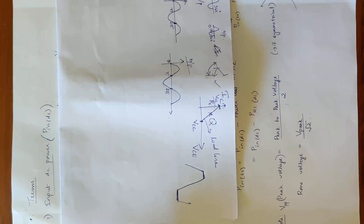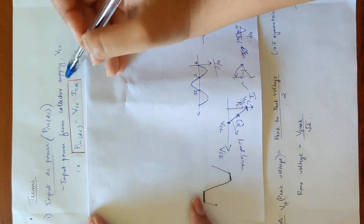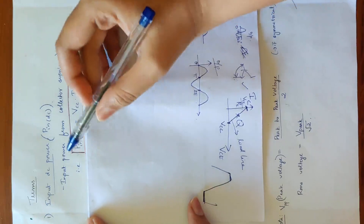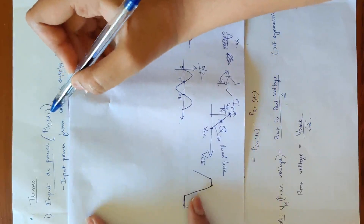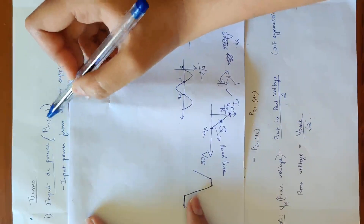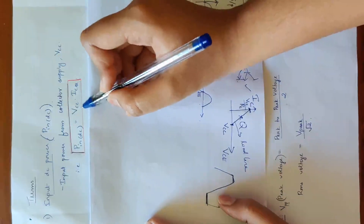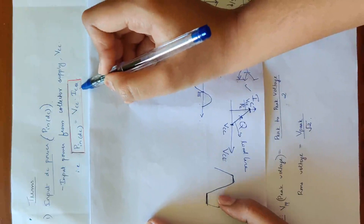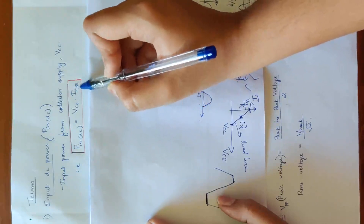The DC battery, that is VCC, represents the input DC power. VCC means input DC power from the collector supply. The power equation is voltage into current. So P_IN_DC equals VCC into ICQ, where VCC is the fixed voltage and ICQ is the collector current at the Q point.